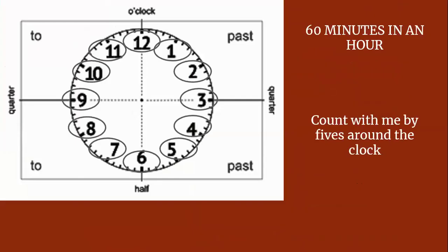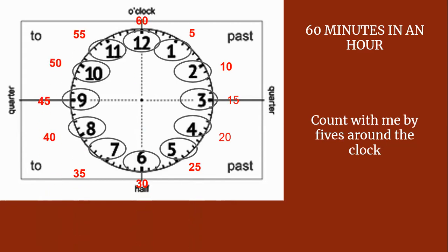There are 60 minutes in an hour. Count with me by fives around the clock: 5, 10, 15, 20, 25, 30, 35, 40, 45, 50, 55, 60.